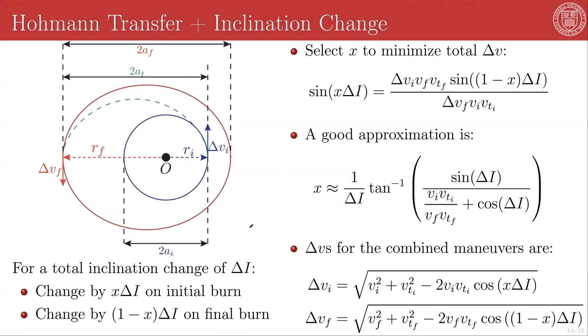And the idea here is that you're going to be distributing your inclination change between your initial and final burn of the Hohmann transfer. So we introduced this new parameter X, where X is strictly defined between 0 and 1, where we're changing by X delta I the inclination on the initial burn, and we're changing by a factor of 1 minus X delta I on the final burn.